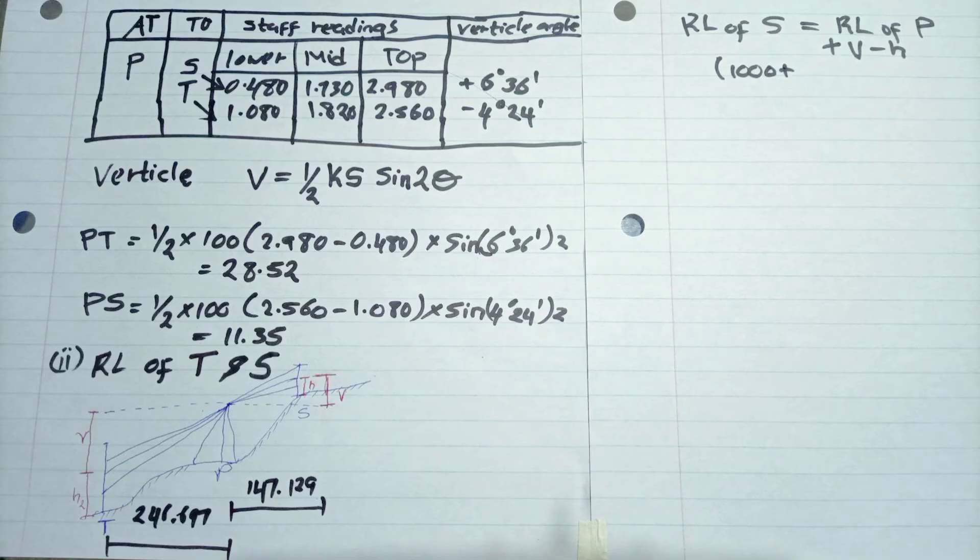So the reduced level of S will be the reduced level of P plus the vertical distance minus the height. So that is 1000 plus 1.5, plus 11.35, minus H, which is the reading to the mid which was taken by the tachometer.